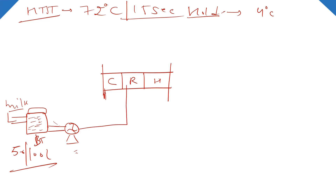From the pump, milk first goes to the regeneration section. The regeneration section has two sub-sections: regeneration one and regeneration two. Now let's consider the temperature at each step. Milk comes from the storage tank at 4°C. At the inlet of regeneration section, milk temperature is 4°C. At the outlet of regeneration one, the temperature will be around 40°C.